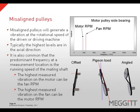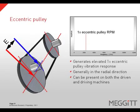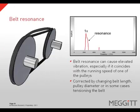An eccentric pulley will generate elevated levels of vibration at one-times the eccentric pulley's RPM. Generally, the vibration will be highest in the radial direction and can be present on both the driven and the driving machines. Belt resonance can cause elevated vibration, especially if it coincides with the running speed of one of the pulleys. This vibration can be corrected by changing the belt length, the pulley diameter, or in some cases tensioning the belt.